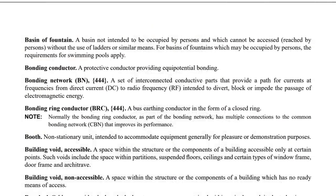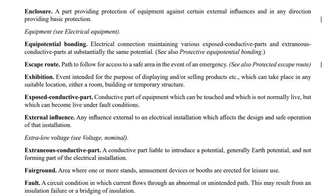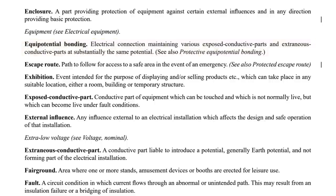Now let's have a look at bonding. If we look again at part 2 of BS7671 you may notice that there isn't a definition for the word bonding, but we can see that equipotential bonding is defined as an electrical connection maintaining various exposed conductive parts and extraneous conductive parts at substantially the same potential. An extraneous conductive part is defined in BS7671 as a conductive part liable to introduce a potential, generally earth potential, and not forming part of the installation.